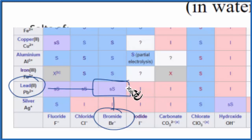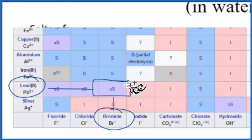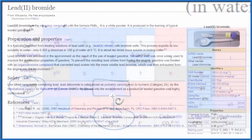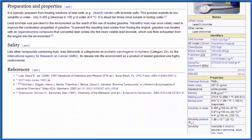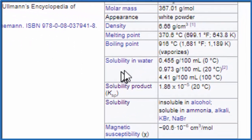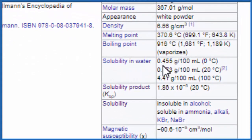When we see slightly soluble, it means only a little bit is going to dissolve. It's not completely insoluble, but for the purpose of many things in chemistry, like net ionic equations, we're going to consider this insoluble. Let's quickly take a look at some data. Here's our lead-2 bromide — solubility is 0.455 grams per 100 milliliters at 0 degrees Celsius. Not very much dissolves, so we consider it slightly soluble.